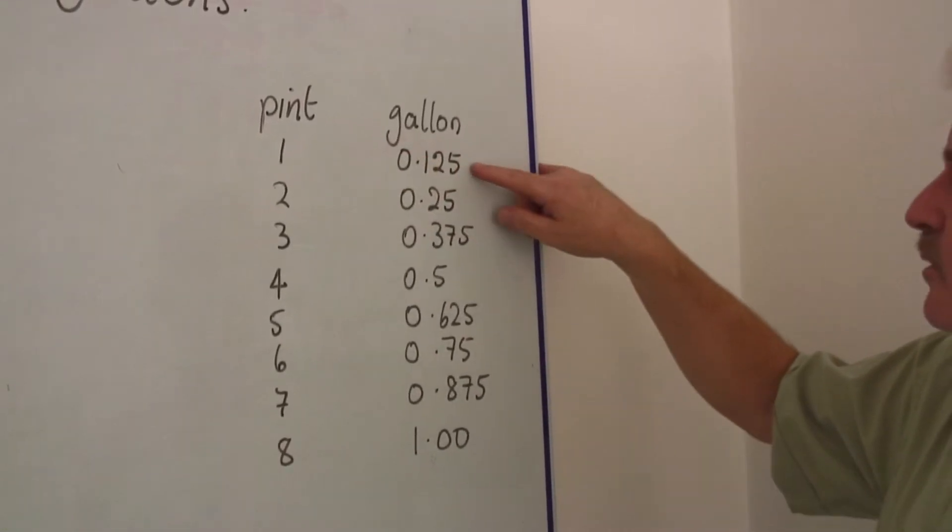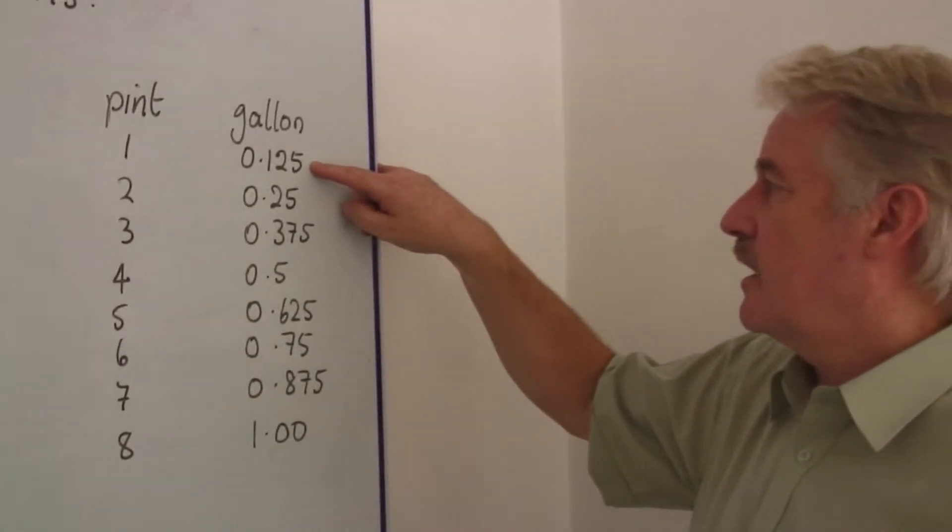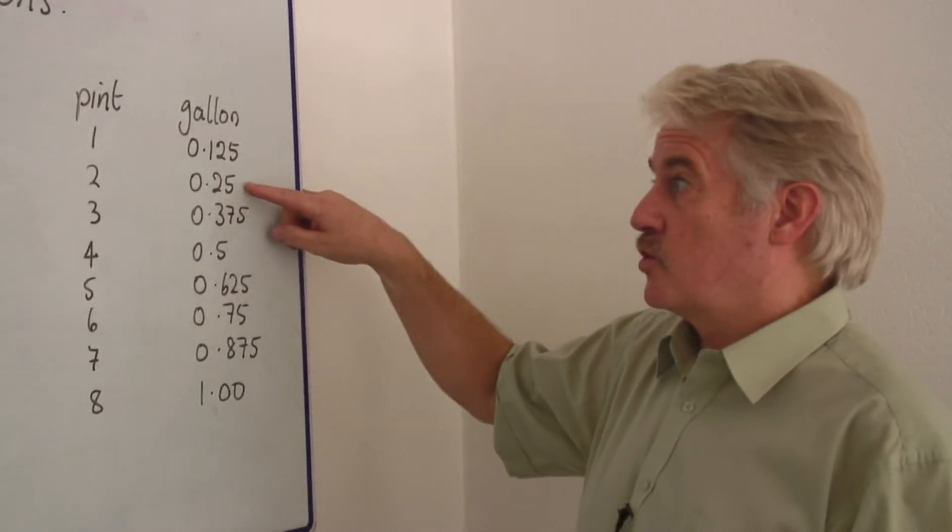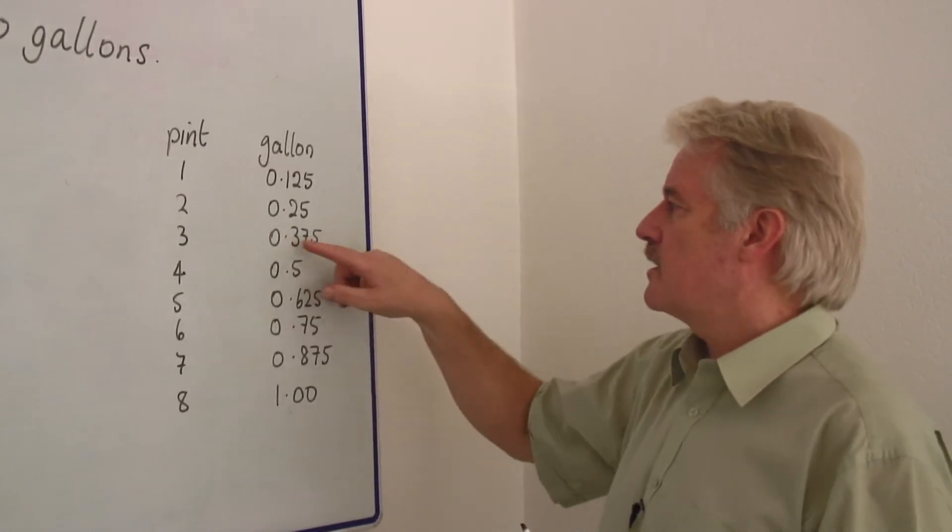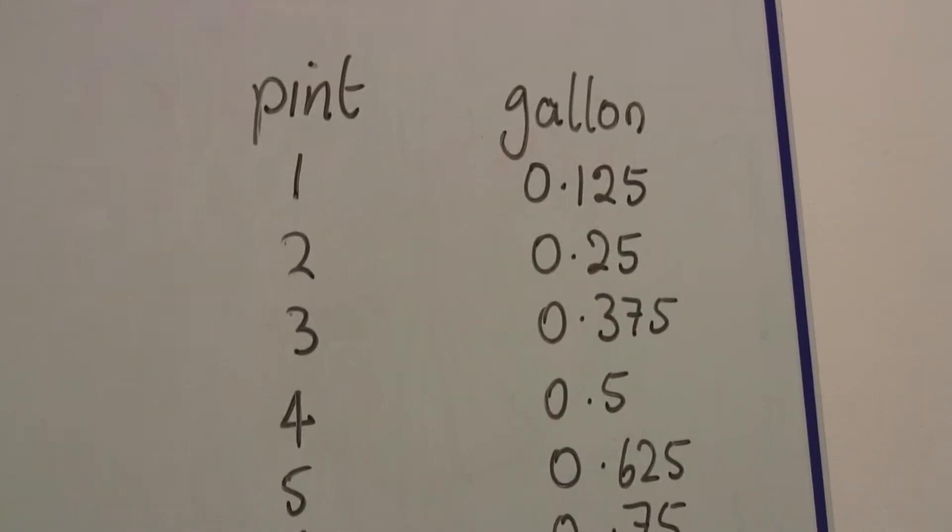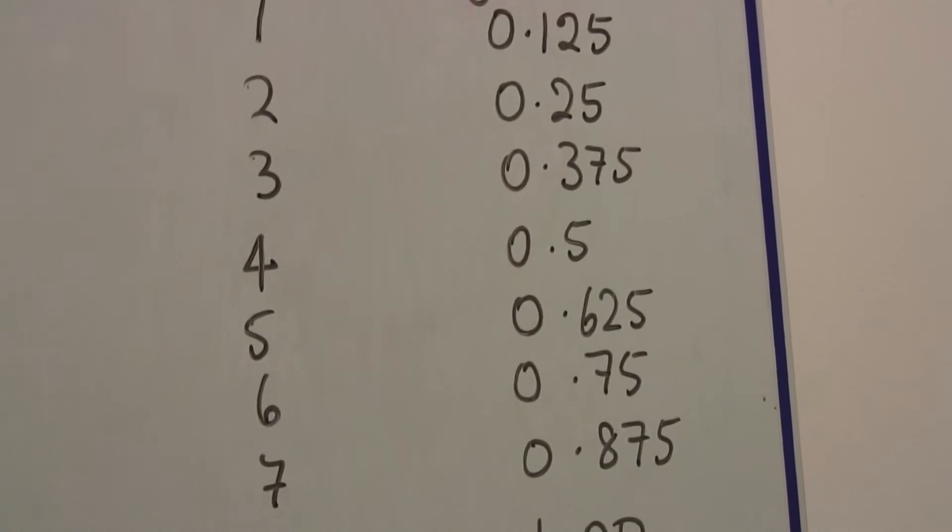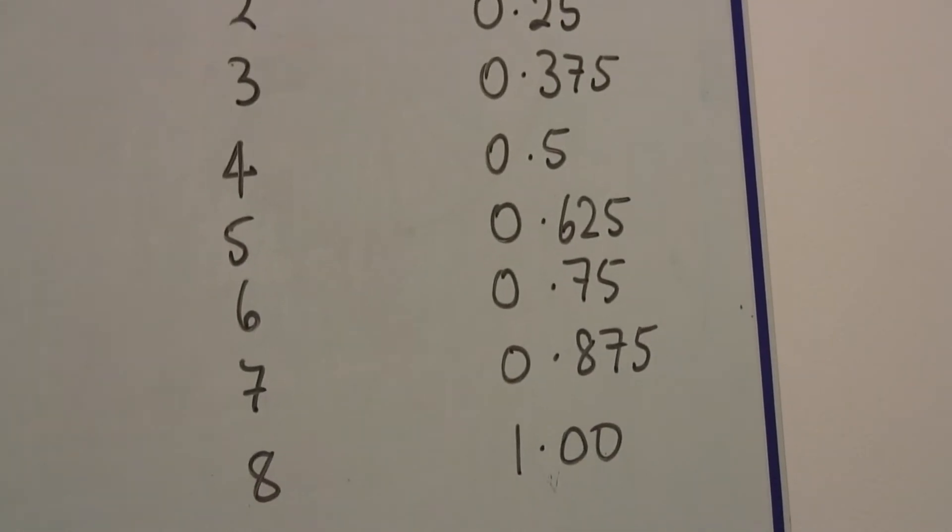Well one pint is 0.125 gallons, two pints is a quarter of a gallon or 0.25, three pints 0.375, four pints is half a gallon 0.5 and so on. So those are your decimals.